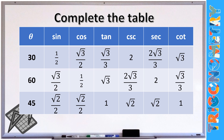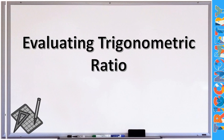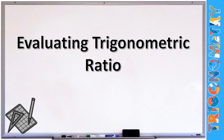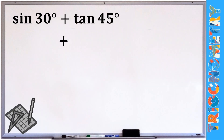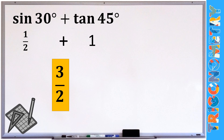Let's use these values to evaluate expressions using the 30, 60, and 45 degree angles. First example: sine 30° + tangent 45°. From our table, sine 30° = 1/2 and tangent 45° = 1. So 1/2 + 1 = 3/2. Our final answer is 3/2.